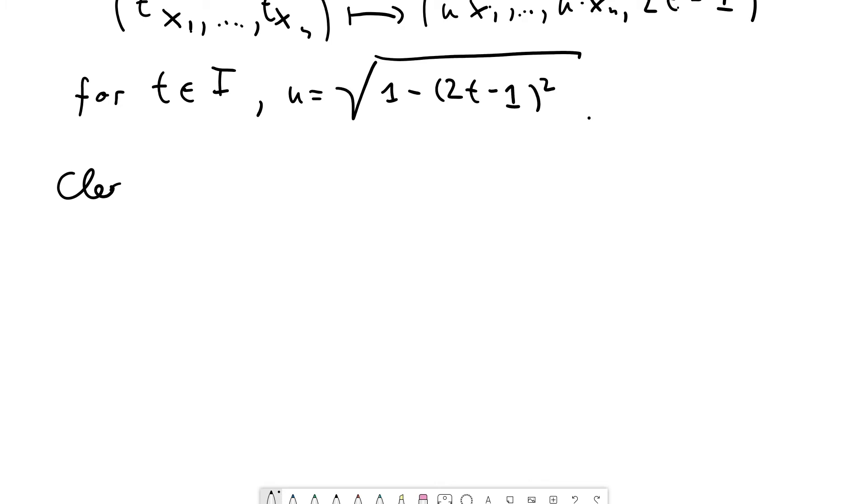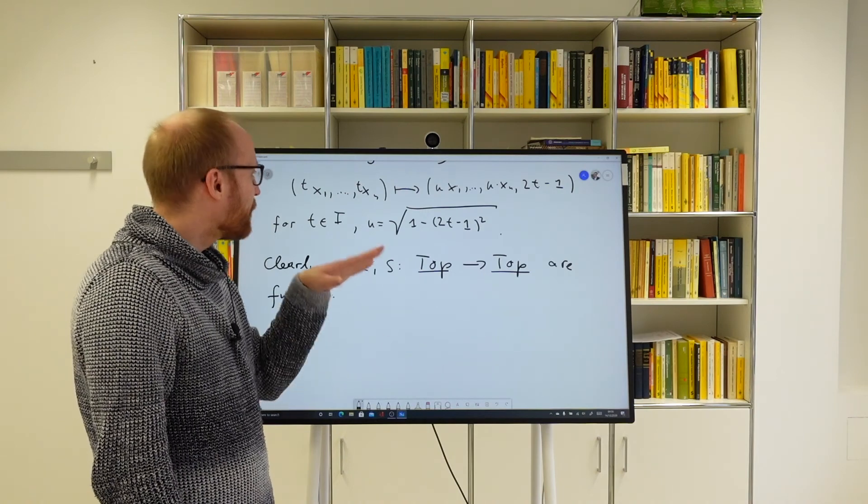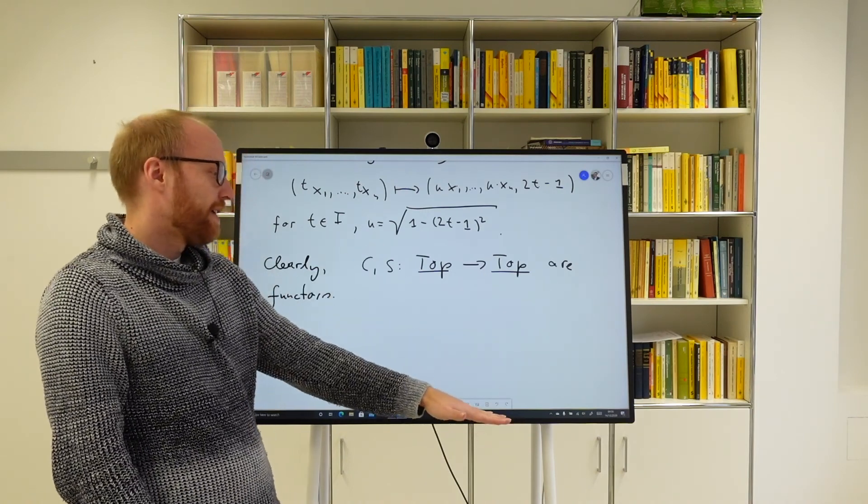So clearly, both those constructions, the cone and the suspension, are of course functors from the category of topological spaces to the category of topological spaces. Yeah. So what does it do on morphisms? Well, if you have a continuous map between X and Y, say, then the map from the cone of X to the cone of Y, this is just the original map f at every altitude.